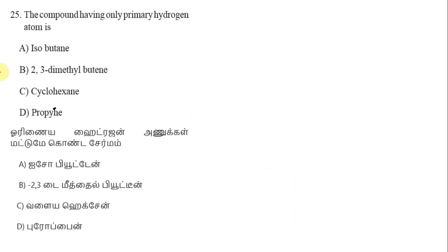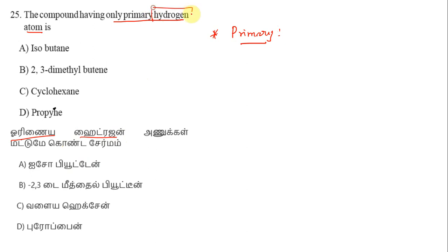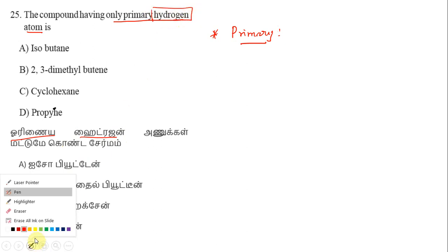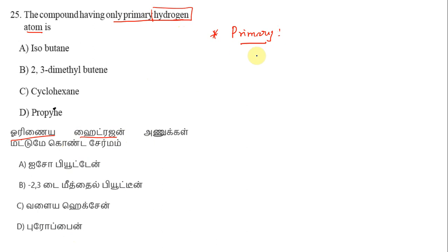The question asks about a compound having only primary hydrogen atoms. First, I am going to explain what a primary hydrogen atom is. A primary hydrogen atom is a hydrogen attached to a primary carbon atom.